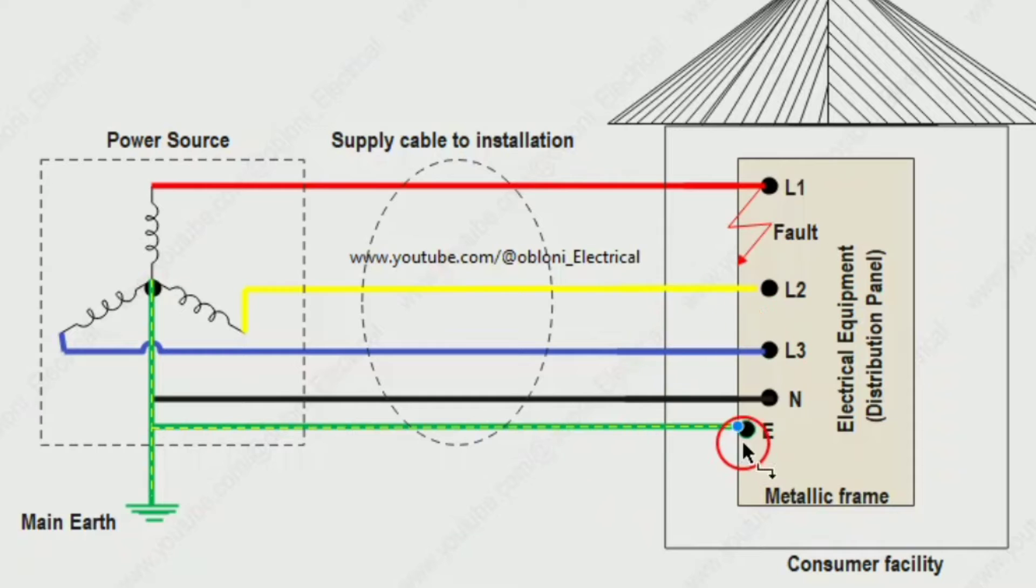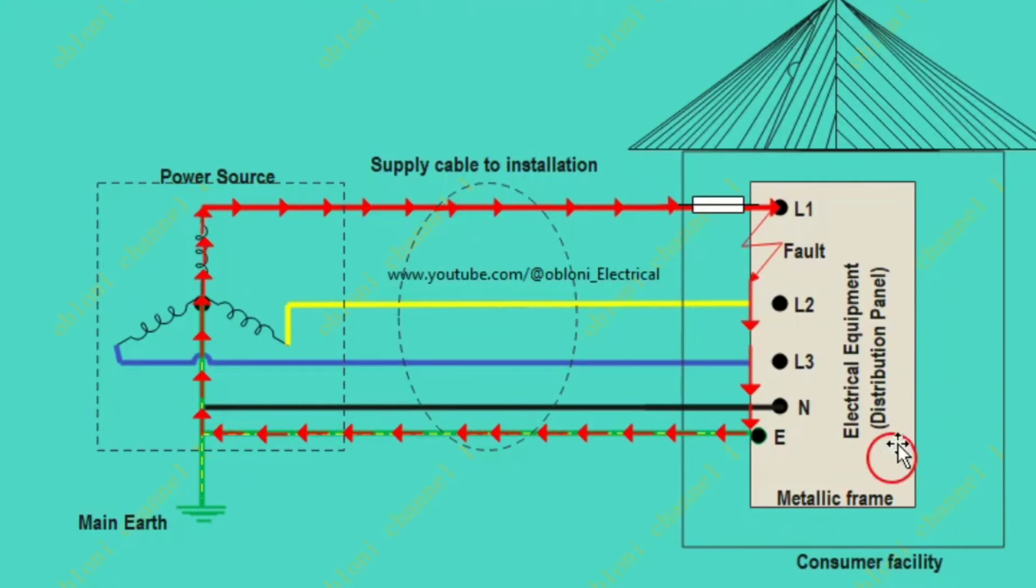Good. In the TNS system, the protective earth conductor is supplied with cables from the supply source just as the neutral wire is supplied directly from the supply source. So in this system, when a short circuit occurs between live and earth, the same amount of high current that would flow when there is a short circuit between live and neutral will still flow in the circuit through the live conductor and back to the source through the supply protective conductor, which is the earth.